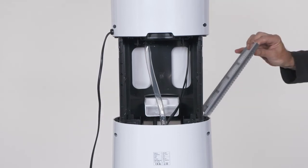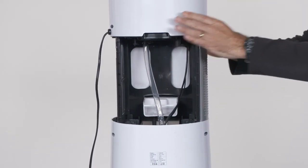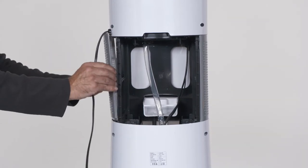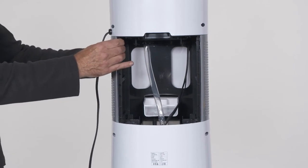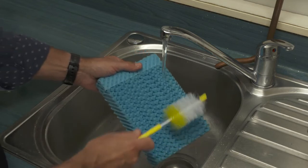You can now refit the side panels by slotting the bottom into the lip and pushing the top into place. The sponges can be cleaned in running water with a soft brush.